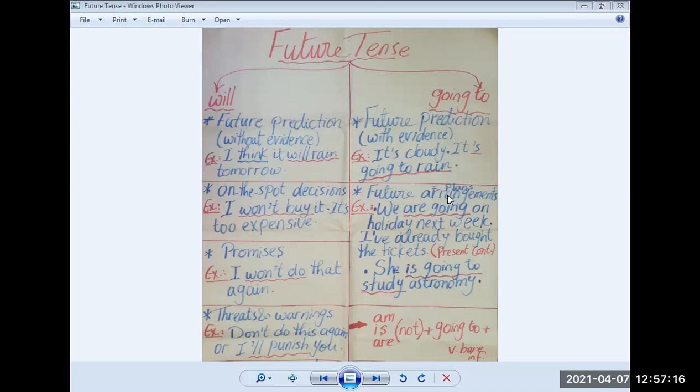For future arrangements, we can also use another form. What is it? Can you guess? Let's read this example. We are going on holiday next week. I've already bought the tickets. So which form do we use here to express the future? Yes, it's the present continuous tense. So to express future arrangements, you can either use the present continuous tense or you use going to.